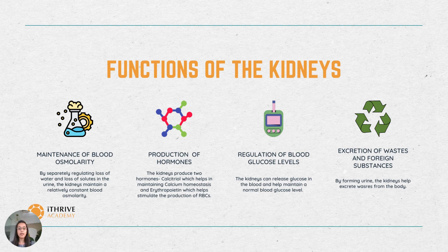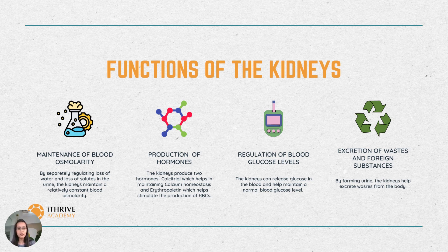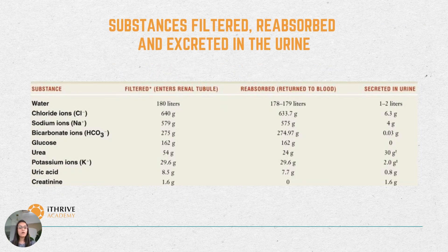The kidneys also help in regulation of blood glucose level — they can release glucose into the blood and help maintain a normal blood glucose level. Last but not the least, kidneys help in the excretion of waste and foreign substances out of the body by forming urine.